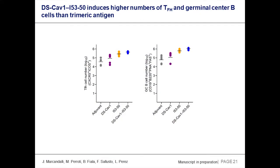We've been analyzing some of the cellular responses to this antigen. One interesting finding is that T follicular helper cells and germinal center B cells — these are total cell counts, not antigen-specific — the total number of these cells after immunization goes up. This appears to be driven by the particle. The particle alone without any antigen drives a large number of these cells. When you put the antigen on there, it's even higher, and in both cases it's higher than just trimeric DS-CAV1.